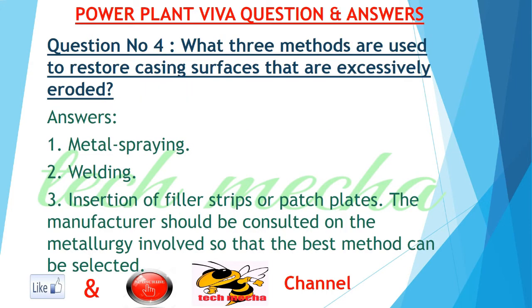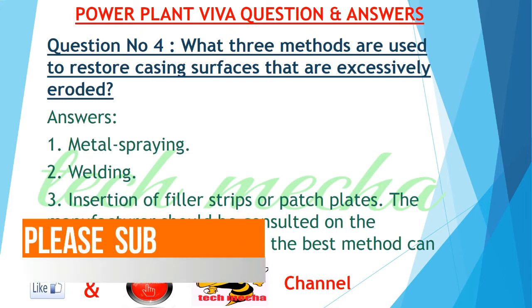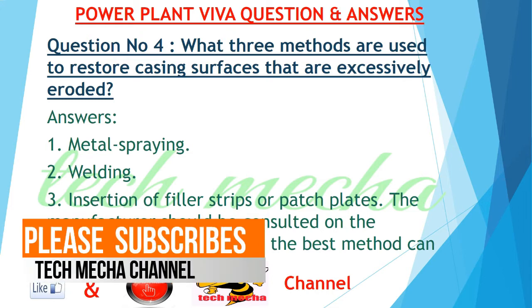Question number 4: What three methods are used to restore casing surfaces that are excessively eroded? 1. Metal spraying. 2. Welding. 3. Insertion of filler strips or patch plates. The manufacturer should be consulted on the metallurgy involved so that the best method can be selected.